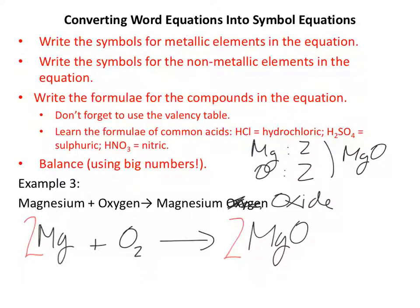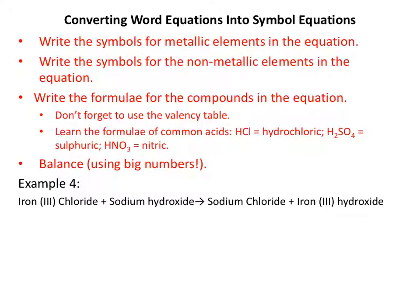On to the next one. Slightly more complicated. I'm looking along my equation for metallic elements and I can't see any metallic elements. In fact, I can't see any substances which are appearing as elements at all, which means we move straight on to write the formula for the compounds in the equation.